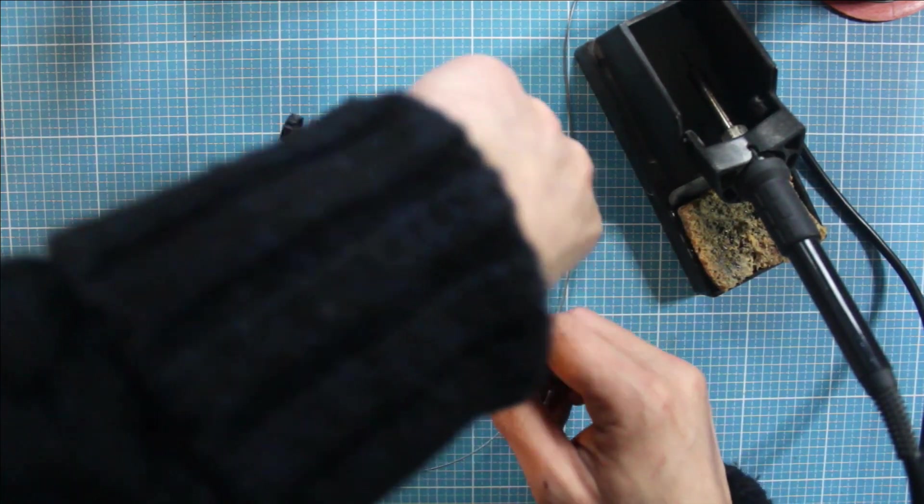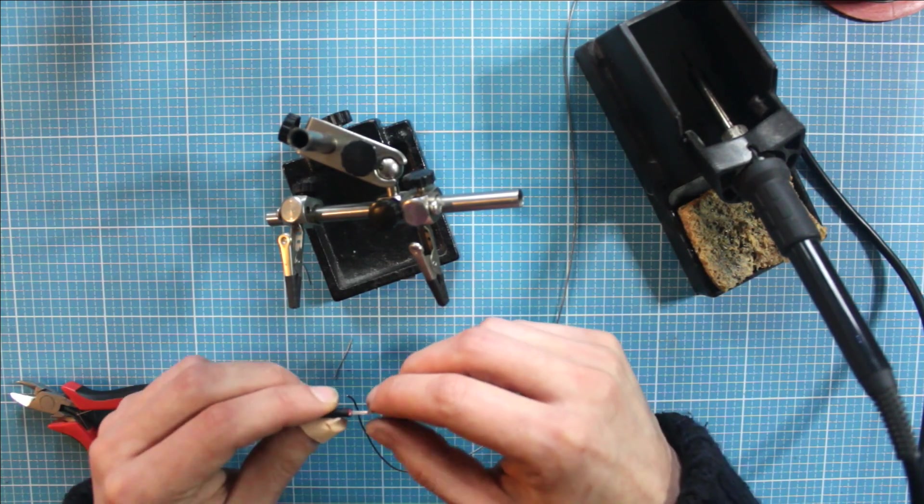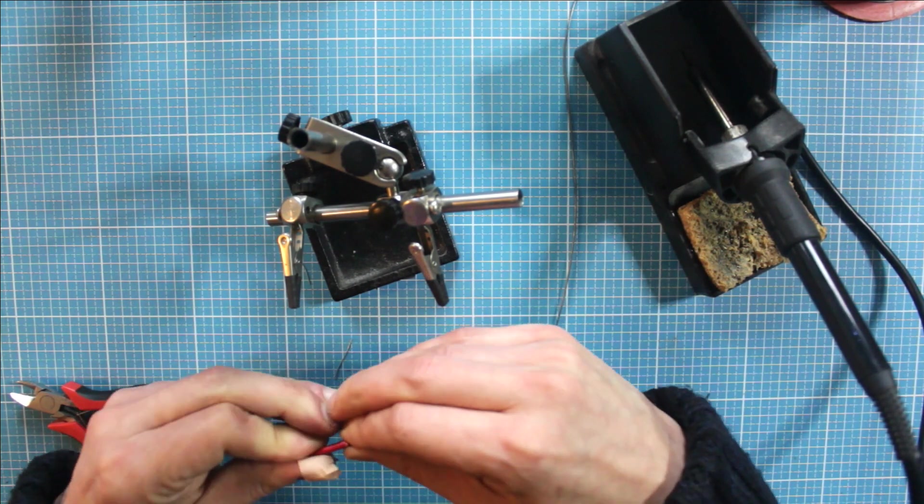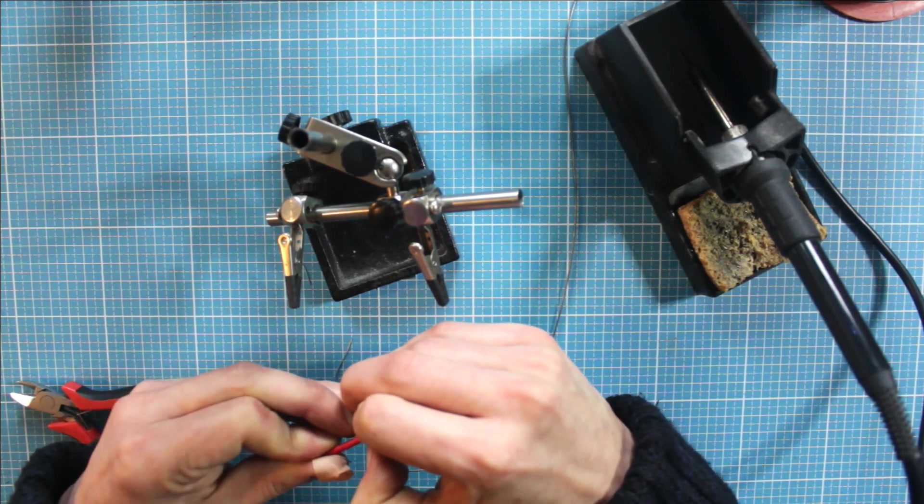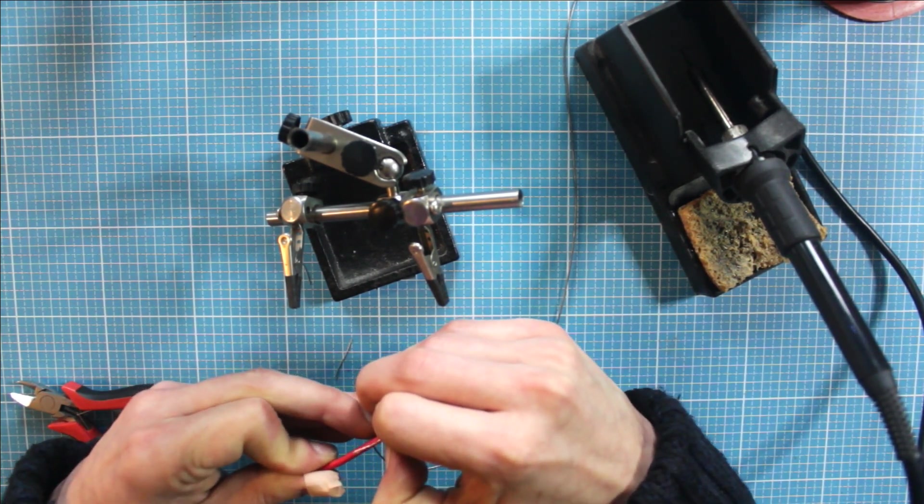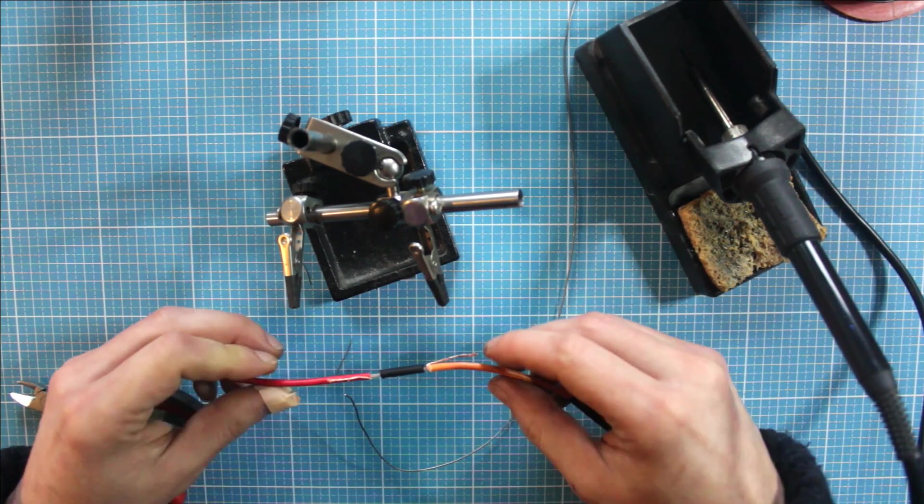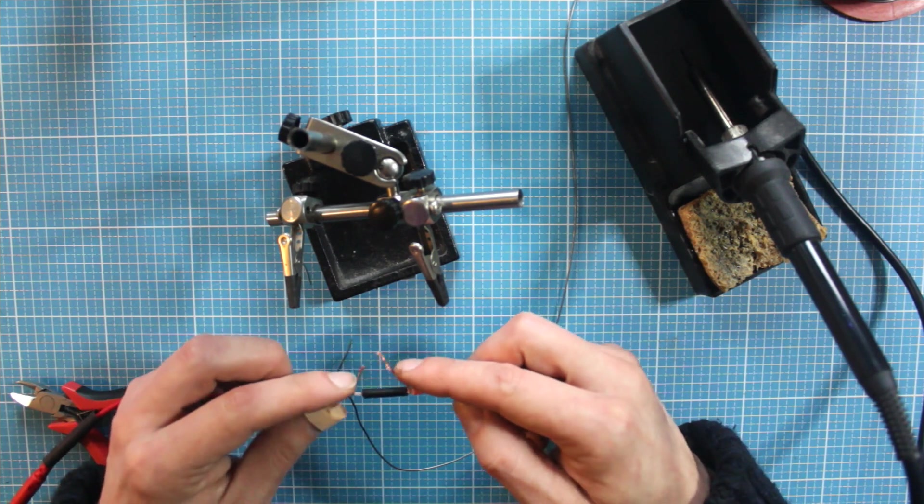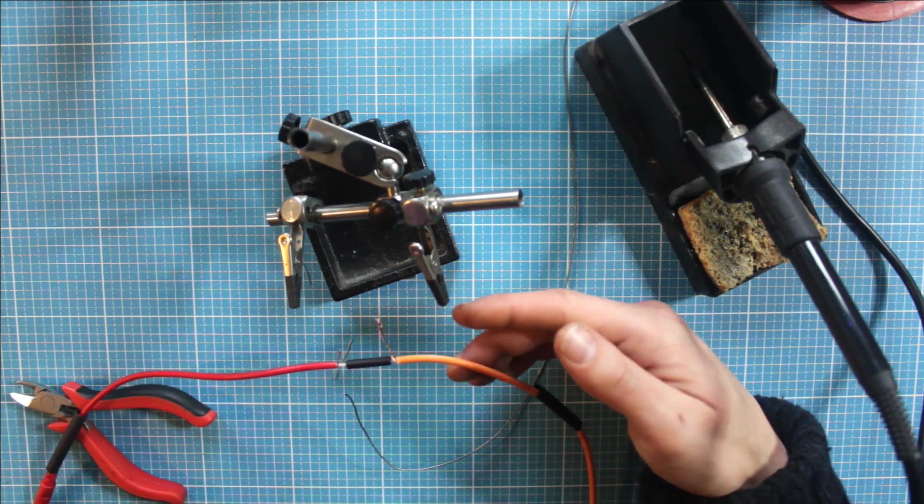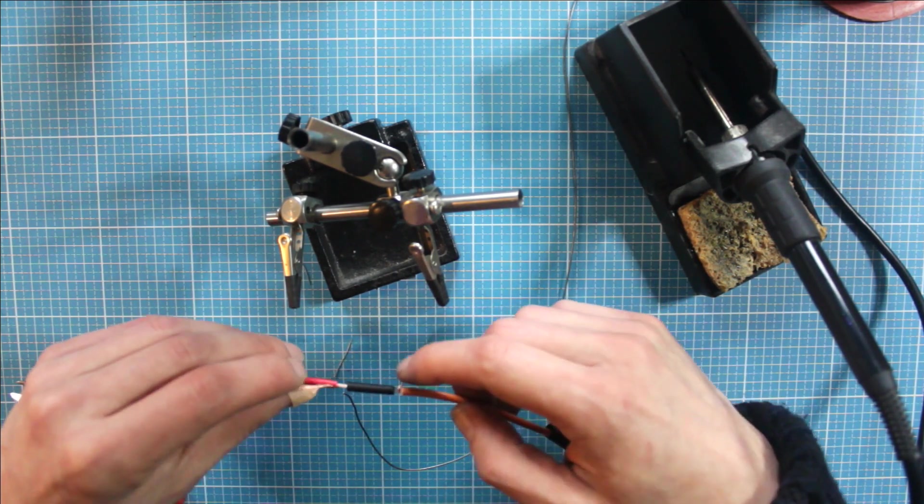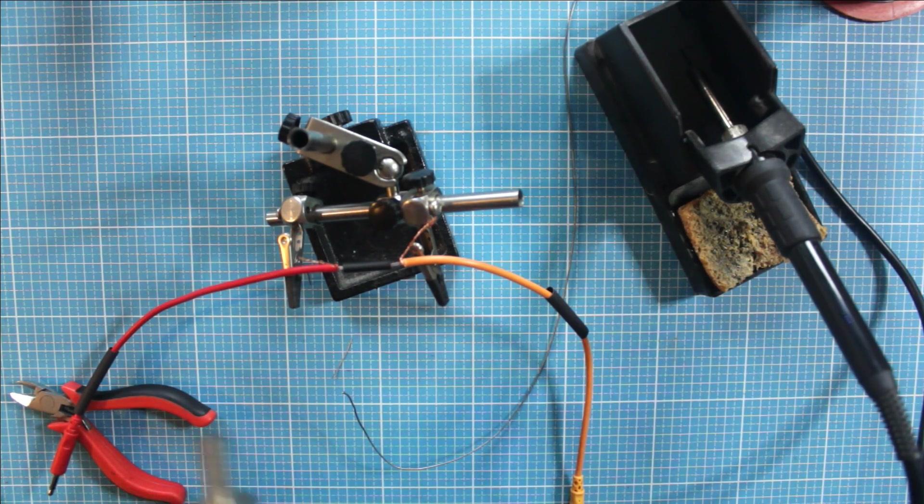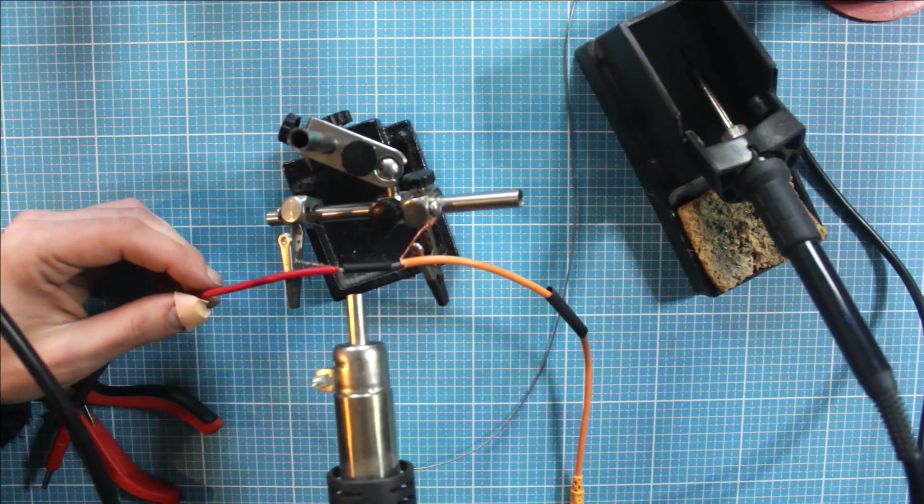All right, so now bring back the heat shrink onto the solder we just did. Right here. And after, we're gonna solder this and put the two heat shrink pieces on it. So let's use some heat for the heat shrink.